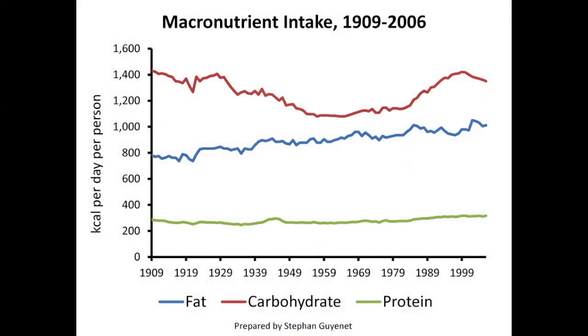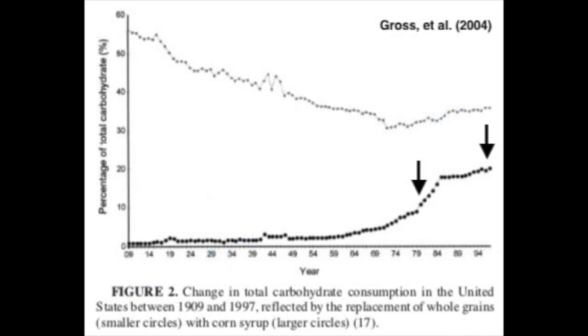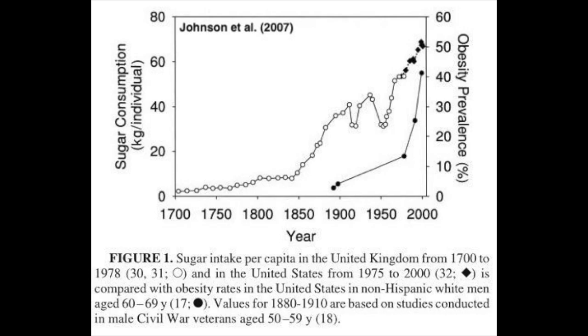Total carbohydrate consumption has not substantially changed in the United States during the 20th century, but sugar consumption has. As a percentage of calories, sugar increased roughly 60 percent from the period 1980 to 1997. The contribution to carbohydrate calories from corn syrup increased from 10 to 20 percent, mostly displacing grains. The sugar timeline seems to fit the one for obesity and the numbers are respectable, but other changes should be considered to keep things in context.